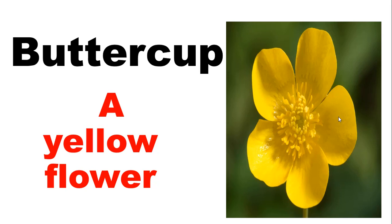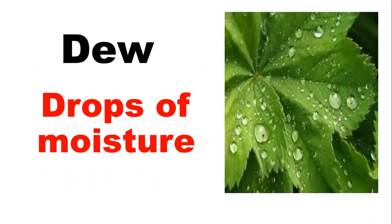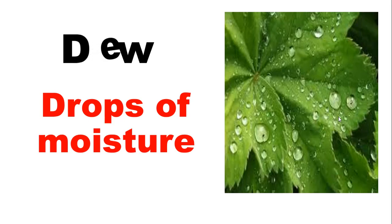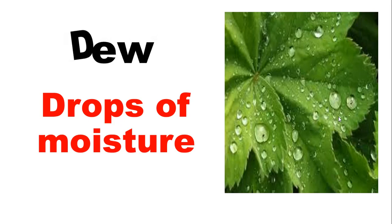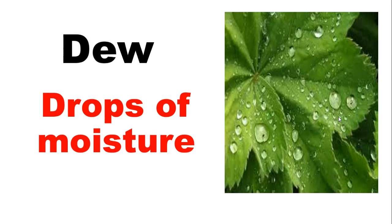Let's see the next word: 'dew'. Let's learn the spelling: D, E, W — Dew. D, E, W — Dew.